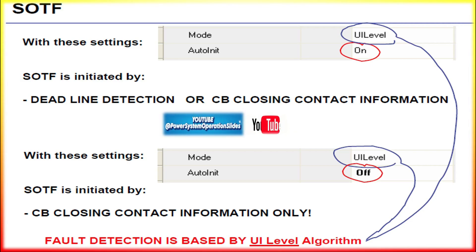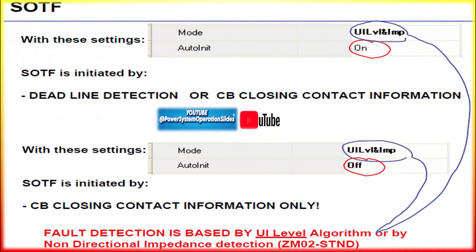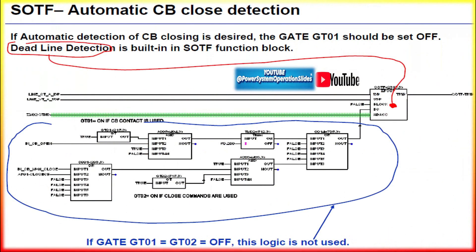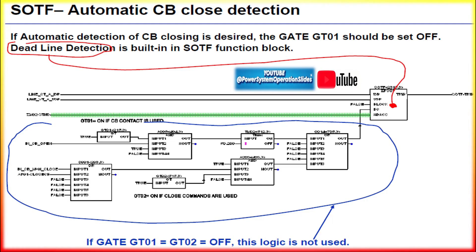Once the breaker closes and the circuit becomes energized, fault current flows immediately. The SOTF logic uses a high-speed current detection element that measures the fault current magnitude instantly upon breaker closure. The relay does not wait for zone-based protection calculations, which may take a few cycles; instead, it sends an immediate trip signal to the breaker if fault conditions are detected.